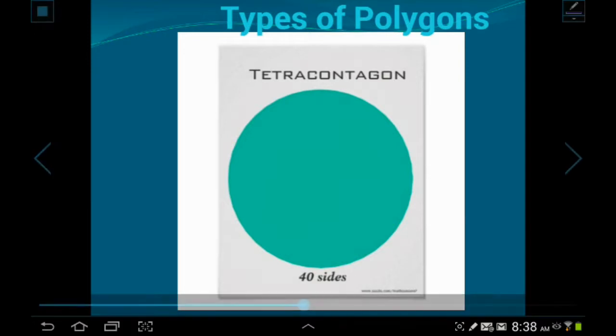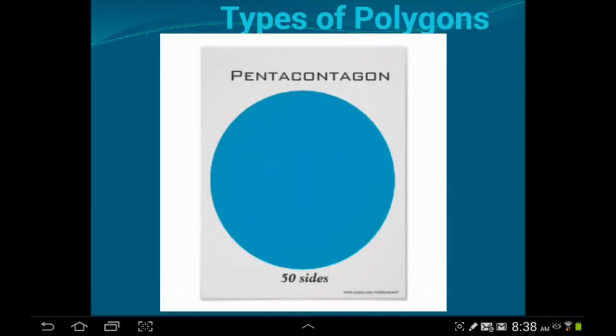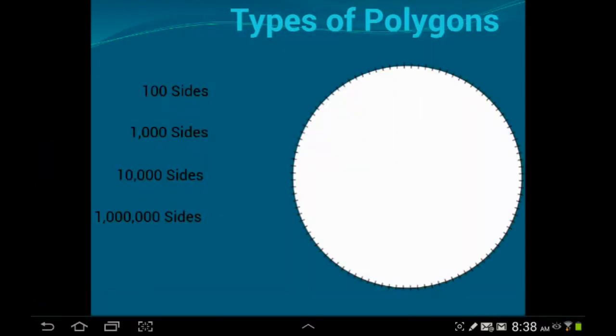And then they just keep going. Tetracontagon, and I'll just kind of click through these so you guys can see them. Pentacontagon. And right here, here's a picture of a hectagon, which is a 100-sided polygon. Definitely looks like a circle. Nobody would be able to tell that that has 100 sides. But if you look really, really closely,